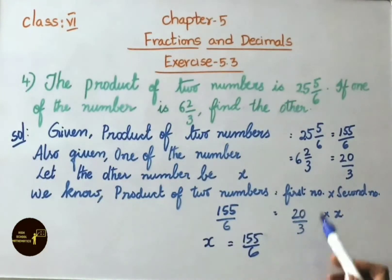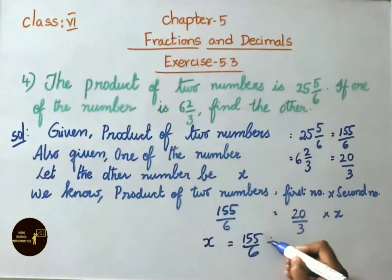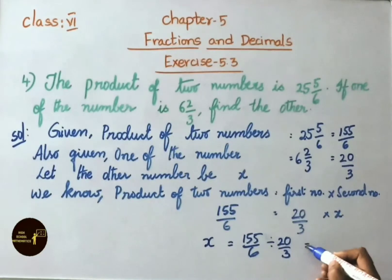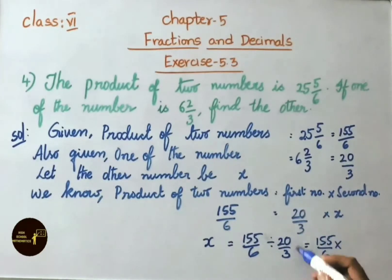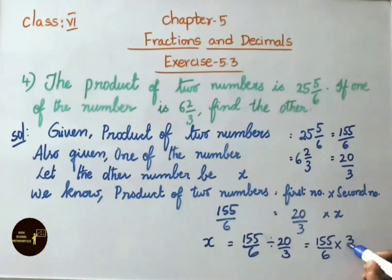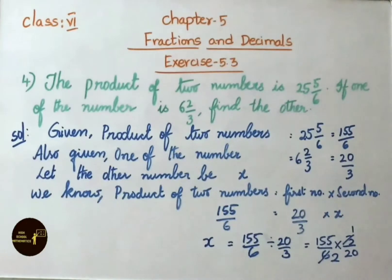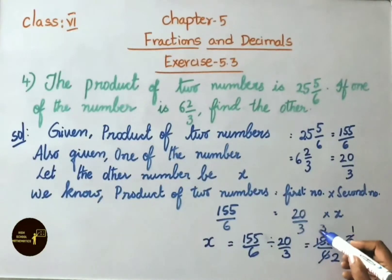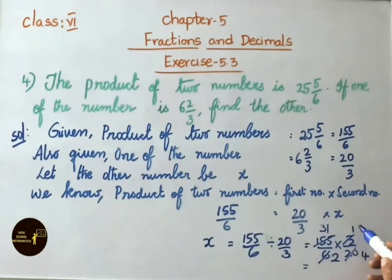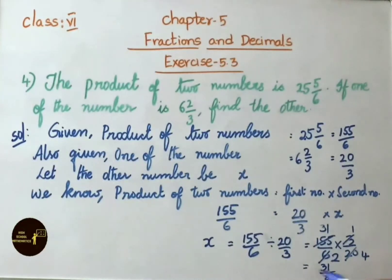x equals 155/6. Convert the division symbol — write reciprocal of 20/3, that is 3/20. Using the 5 times table: 5 fours are 20, 5 thirty-ones are 155. Multiply numerator 31 into 1 equals 31, by denominator 2 fours are 8. Therefore the other number, x, is 31/8.